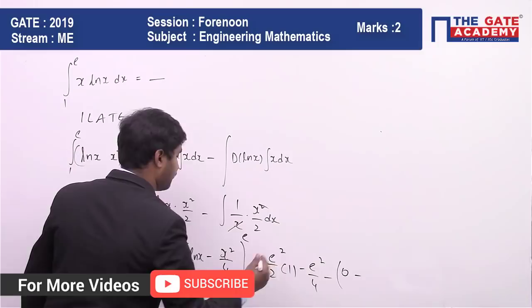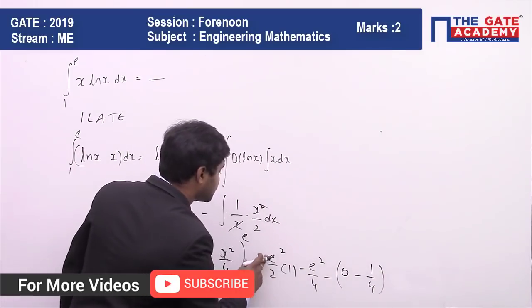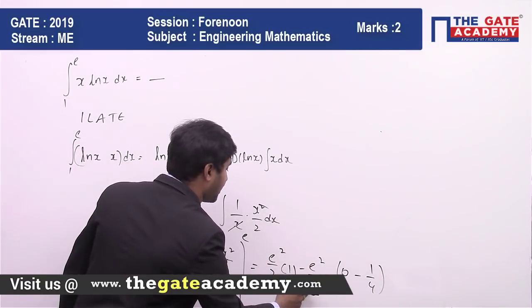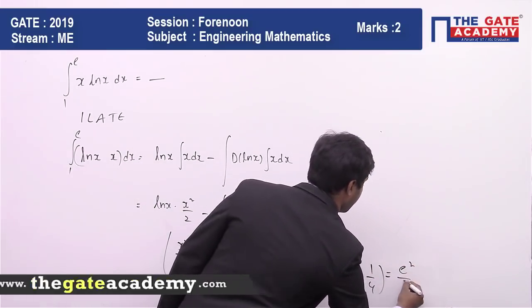Minus 1/4. So here, e²/2 minus e²/4, this is going to be equal to e²/4.